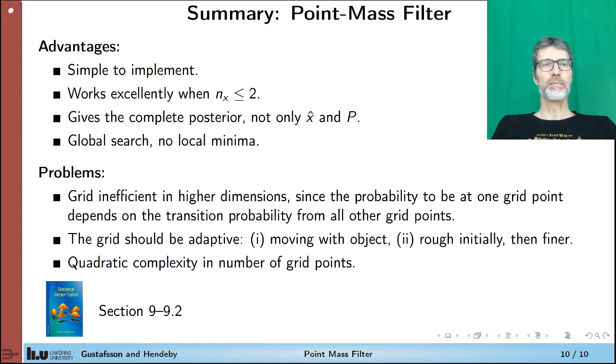But there are several problems. The grid is inefficient in high dimensions, since the probability to get to one grid point depends on the transition probability from all other grid points. So we have to consider all possible moves from one grid point to the next one. The grid should be adaptive. If the target is moving, then the grid also has to be moving. And when we get more information, we should have a finer grid. And there's a quadratic complexity in the number of grid points, which is maybe the real bottleneck of the point mass filter. Reading advice is sections 9.1 to 9.2.